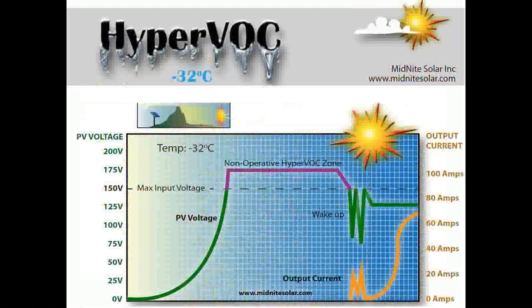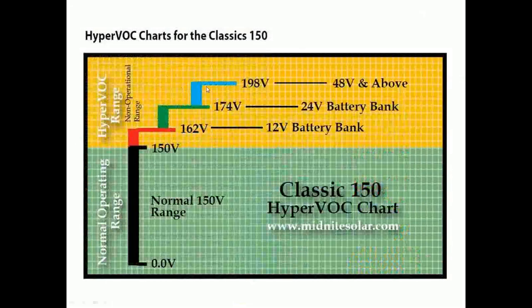This is Hyperbox — one of those features that we have that no one else has. In cold climates, if you run up to that 150-volt limit with anybody else's charge controller, they will blow up if you go over 150 volts, and that is not covered under warranty. With the Classic and Classic Lights, they do not blow up if you go over voltage — they merely shut off. On a Classic 150 with a 48-volt system, if you go up to 198 volts, it will not blow up.